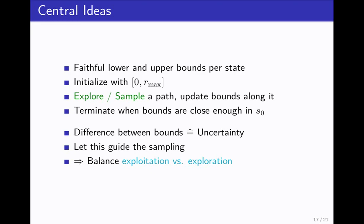The difference between the bounds kind of give us a level of uncertainty. If a state has high difference between the bounds, we have high uncertainty. If it's very close, like 10 to the minus 6, we kind of know what the value of this state is. The idea from machine learning basically just is, let this uncertainty guide our sampling. This kind of balances then exploration versus exploitation. If we aren't sure about some region, we explore it. If we're sure that it's bad, we don't explore it.